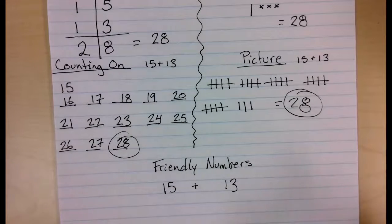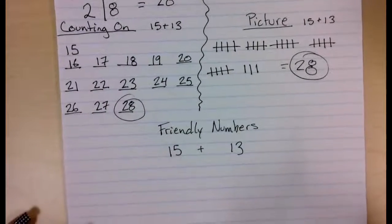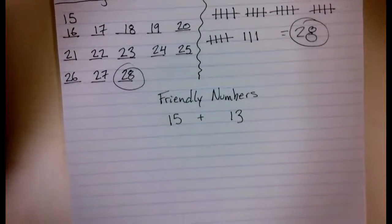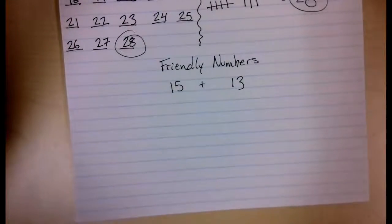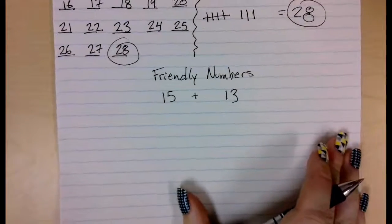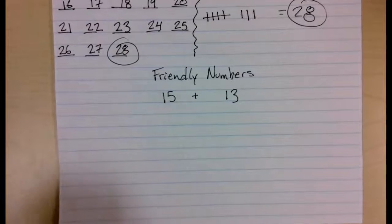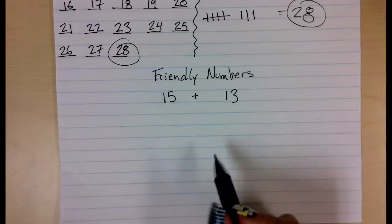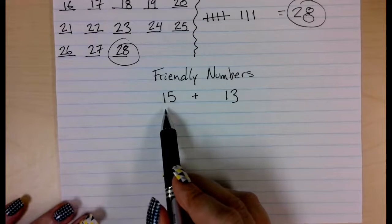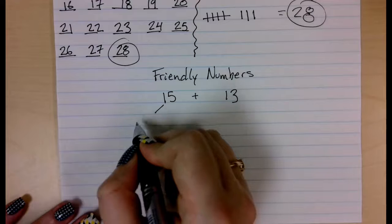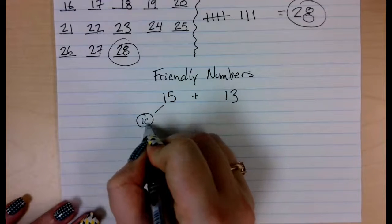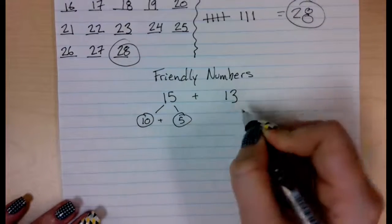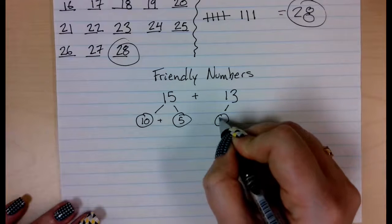Alright, my last strategy. I really like the friendly numbers strategy because once you get into more complicated math, like in high school and junior high, they do things that are very similar to this. We call this, here's a new word, algebraic thinking. So, for our friendly numbers, we are going to take our numbers and we are going to break them down. So I am going to break 15 into 10 plus 5 and I am going to break 13 into 10 plus 3.